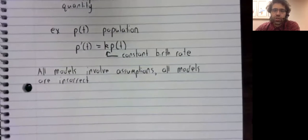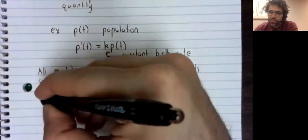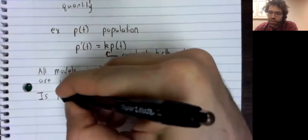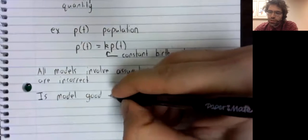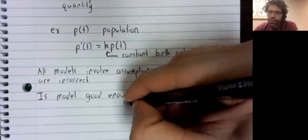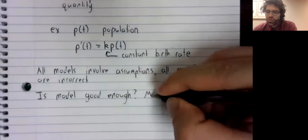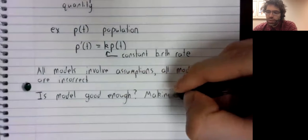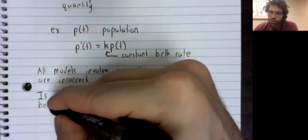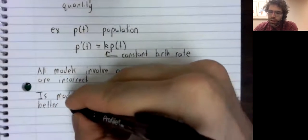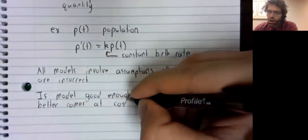So then you have to make a sort of value judgment. Is the model good enough? And we have to ask this question, because making the model better comes at a cost.